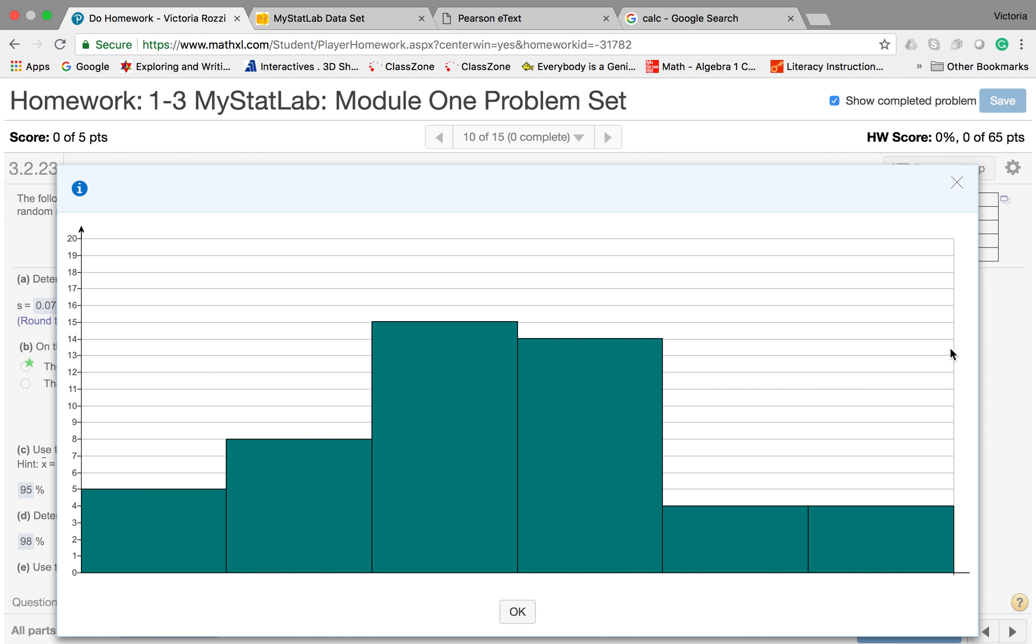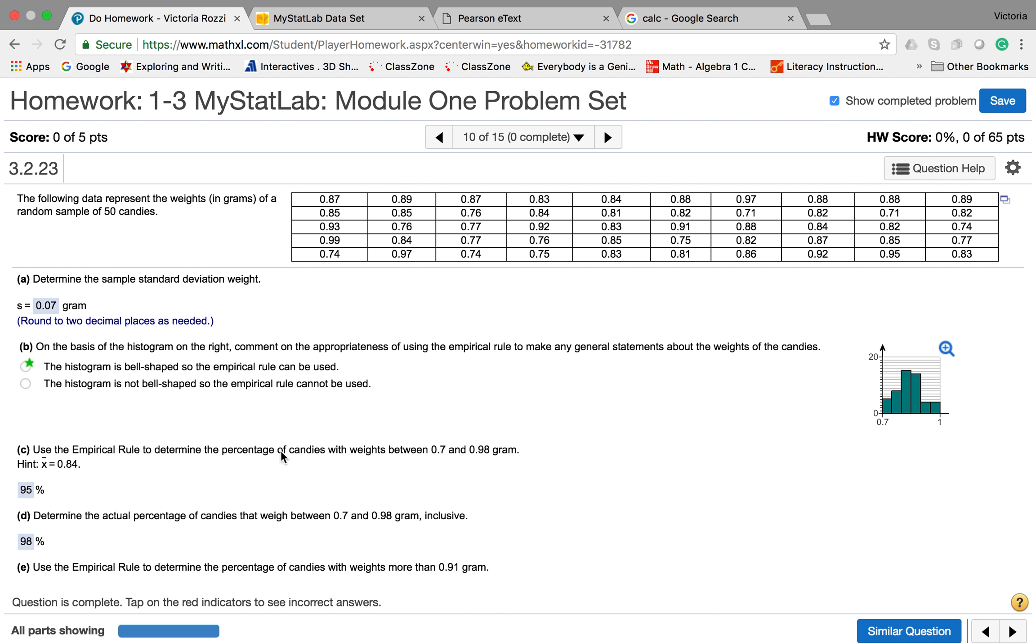If we look here, it's approximately normal. It's kind of the same on the left and the right. There really aren't any outliers. This doesn't have much skewed to the right or skewed to the left. If anything, I think it would be a tiny bit skewed right, but really it's fairly symmetric. So yeah, it's okay to use the empirical rule. The histogram is bell-shaped, so the empirical rule can be used.